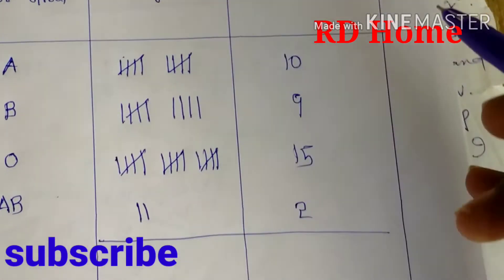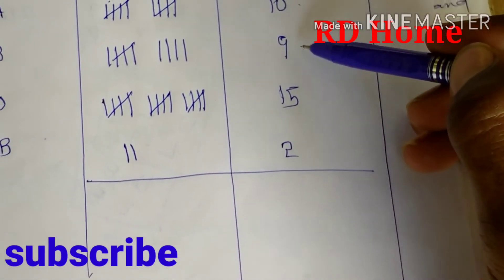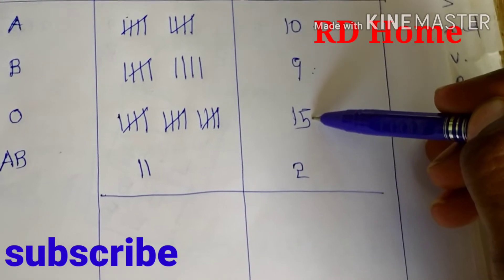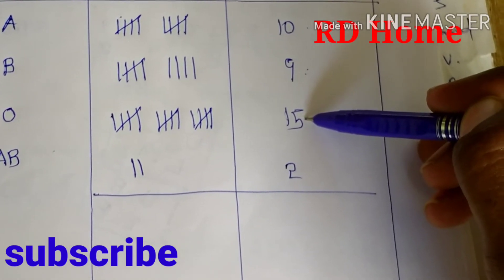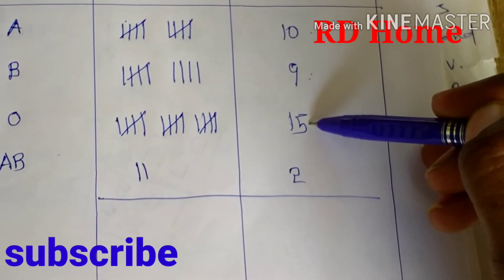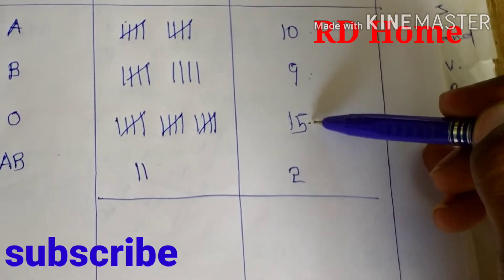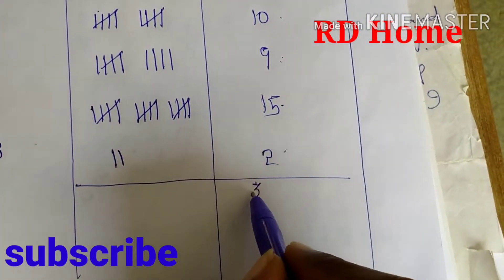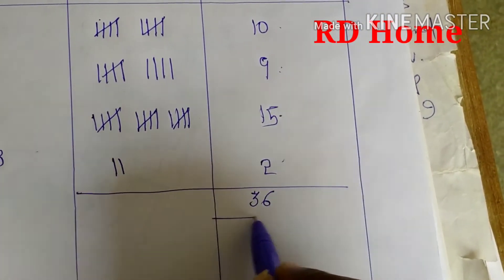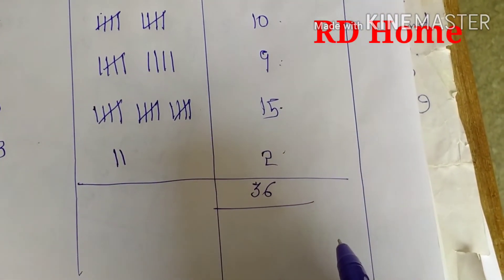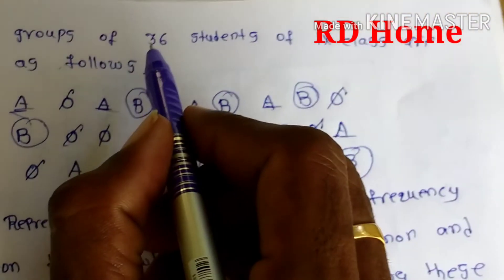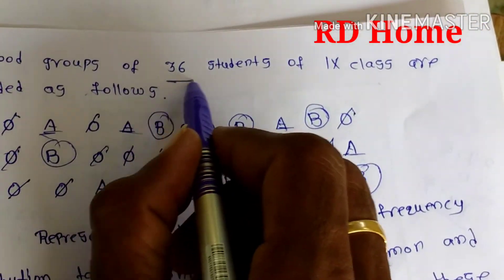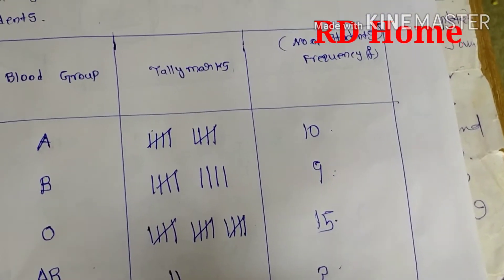Now let's check the total. 10 plus 9 is 19, and 19 plus 15 gives 34, and 34 plus 2 gives 36. You are getting a total of 36 students — and we have 36 students in the data, so the totals are matched.